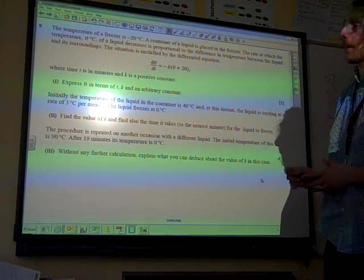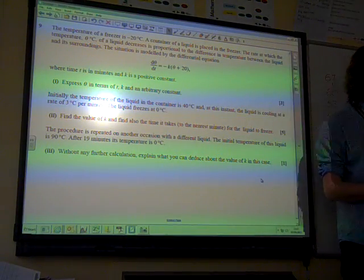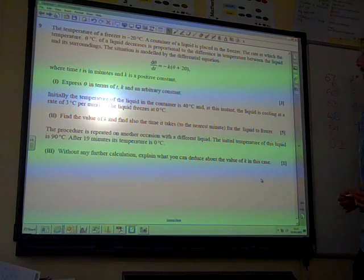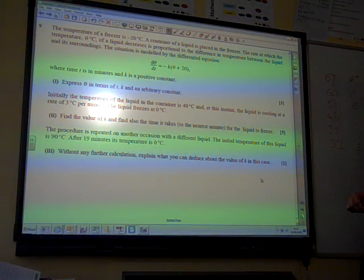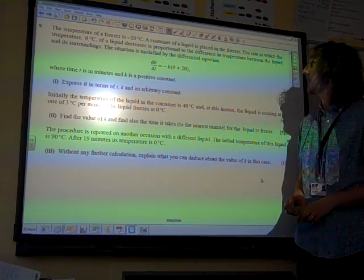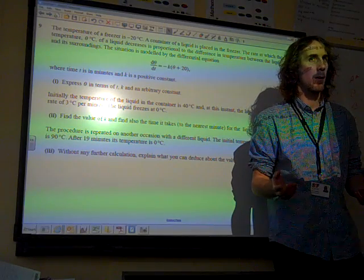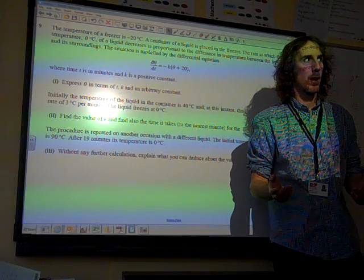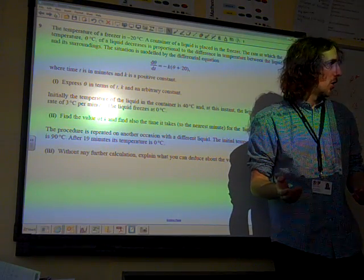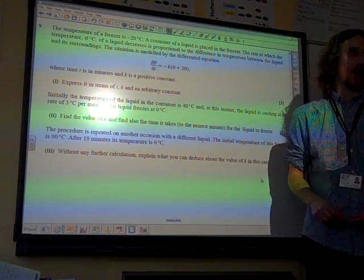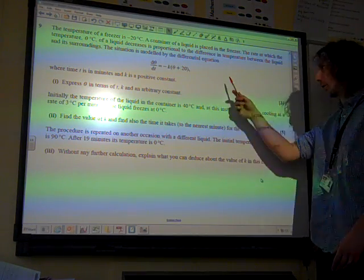Oh, we're on. Right. The temperature of a freezer is minus 20. A container of liquid is placed in the freezer, and the rate at which the temperature of the liquid decreases is proportionally different in temperature between the liquid and its surroundings. What's that that we just described? Newton's law of cooling. Yeah, it's Newton's law of cooling.